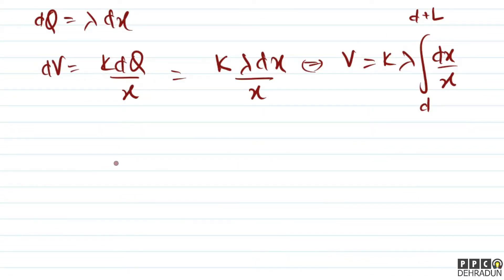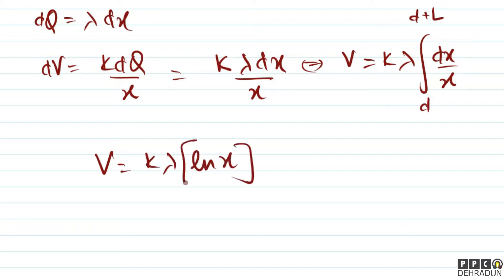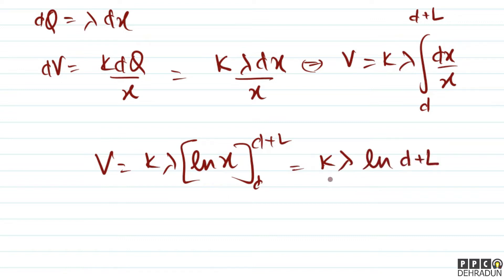Integrating DX/X gives ln(X), and putting in the limits D to D+L: V = k·lambda × [ln(D+L) − ln(D)] = k·lambda × ln[(D+L)/D]. This is our final answer.